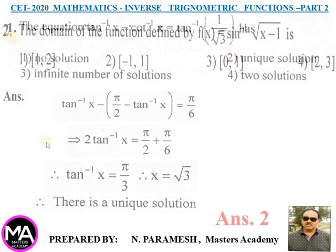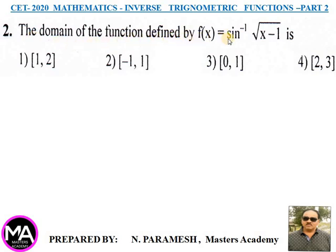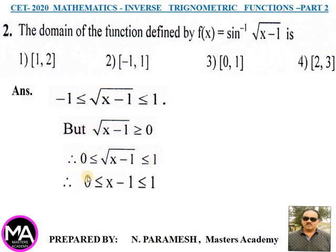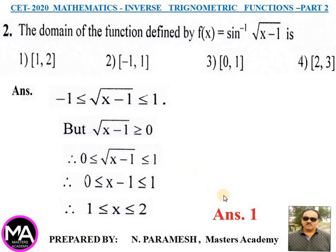Question 2: Find the domain of f(x) = sin⁻¹(√(x−1)). Answer: The domain of sin⁻¹ requires −1 ≤ argument ≤ 1, but √(x−1) ≥ 0, so 0 ≤ √(x−1) ≤ 1. Squaring: 0 ≤ x−1 ≤ 1, adding 1: 1 ≤ x ≤ 2. Therefore domain is the closed interval [1, 2]; option 1 is correct.